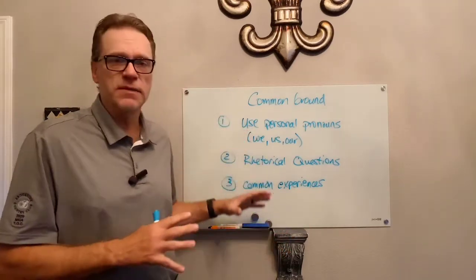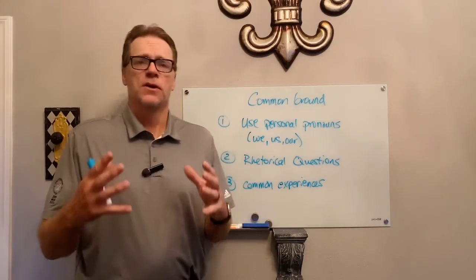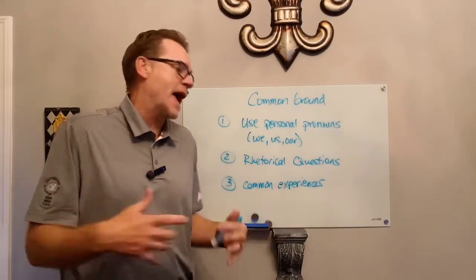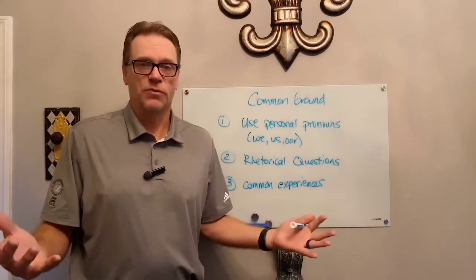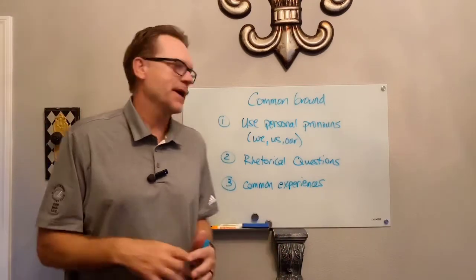There's a few different ways to build common ground. The chapter talks about this. Number one, use personal pronouns. So when we talk about things, we're going to say we, us, our. So we're in this together is basically what you're trying to say.